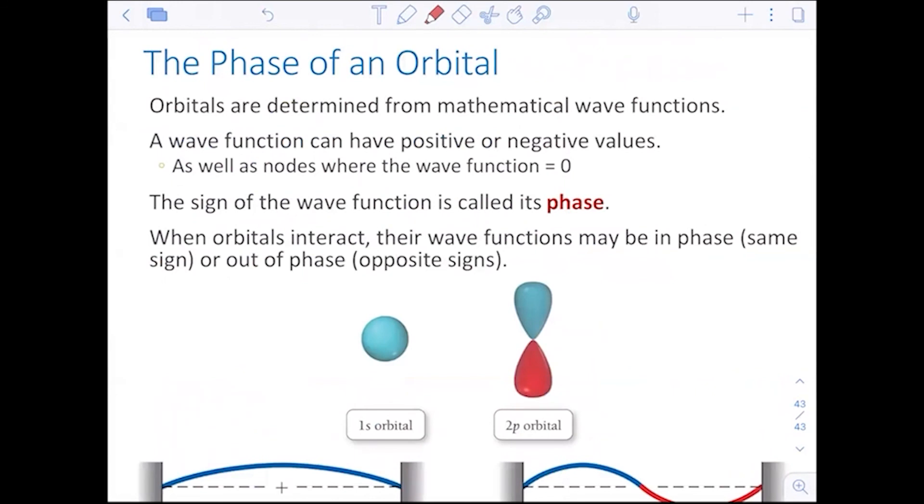The phase of an orbital, why I shaded some things and then shade the other, comes with identifying the actual phase of the orbital. And those are mathematical wave functions. You do not need to know that. That would be way, way advanced organic chemistry.